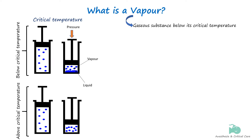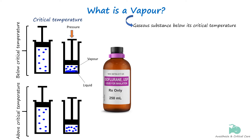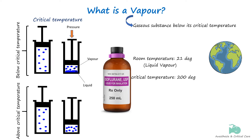Let us take isoflurane as an example. The critical temperature of isoflurane is about 200 degrees Celsius. Therefore, at room temperature around 21 degrees Celsius and atmospheric pressure of 760 mmHg, isoflurane exists as a liquid vapor phase.